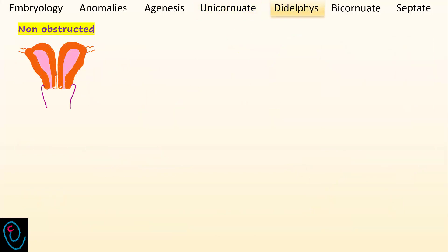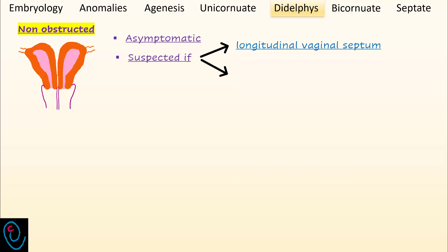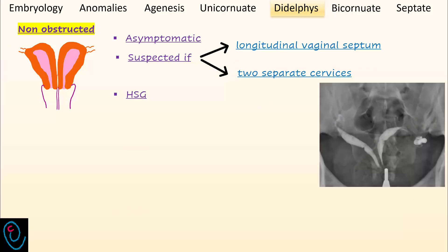The non-obstructive type of uterus didelphys is usually asymptomatic and should be suspected if a longitudinal vaginal septum or two cervical canals are discovered. Hysterosalpingography reveals two separate endocervical canals, each opening into two separate non-communicating endometrial cavities. Each endometrial cavity ends with a solitary fallopian tube. Surgery in the form of metroplasty is rarely performed.